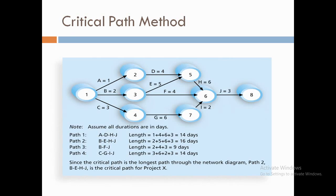The second tool is the Critical Path Method (CPM), used for predicting the earliest time by which a project can be completed with minimum delay or float. This is done by identifying the longest path and its duration in the network diagram, such that all necessary tasks get completed. In the diagram, the path B-E-H-J has the maximum duration of 16 days and is therefore taken as the critical path, ensuring all other activities are completed and the project finishes successfully.